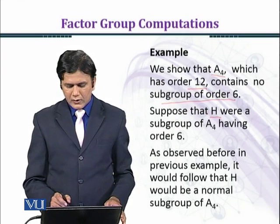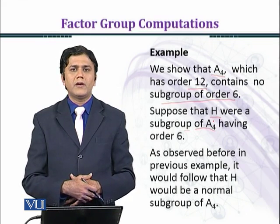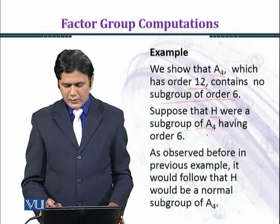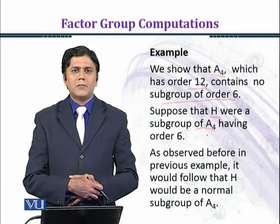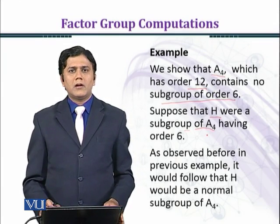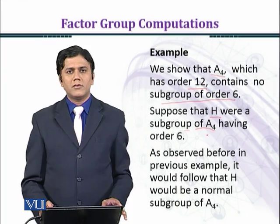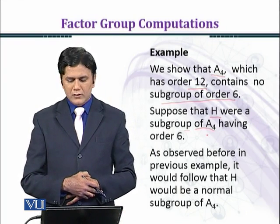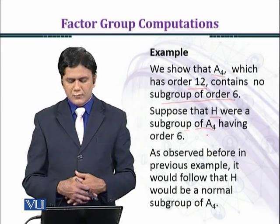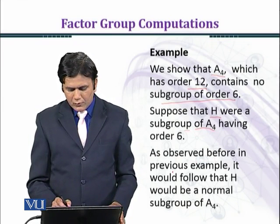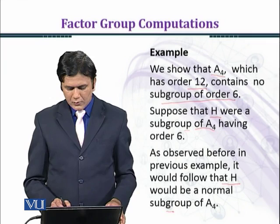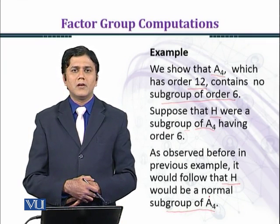We will compute this example in a sophisticated way. A4, which has order 12, contains no subgroup of order 6. Suppose that H were a subgroup of A4 having order 6. On the contrary, we assume that A4 has order 6. As observed before in previous example, it would follow that H would be a normal subgroup of A4.